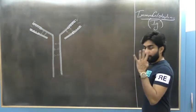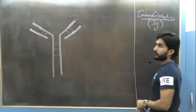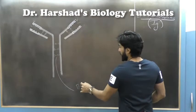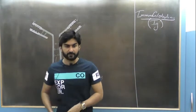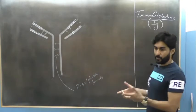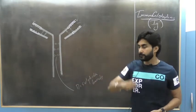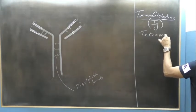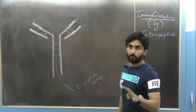Antibodies are made up of four polypeptide chains — one, two, three, four — held by disulfide bonds. Similar to insulin, which has multiple chains held by disulfide bonds, antibodies also use disulfide bonds to hold their polypeptide chains. Because of these four chains, we say antibodies are tetrapeptide molecules.